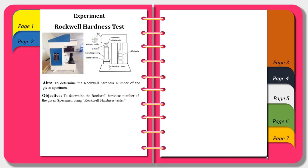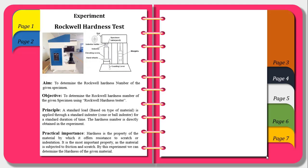The objective of the experiment is to determine the Rockwell Hardness number of the given specimen using Rockwell Hardness test. The principle and the practical importance has been mentioned here.